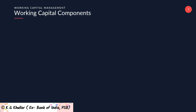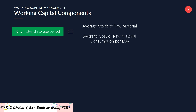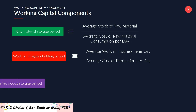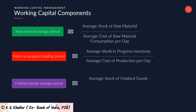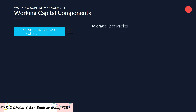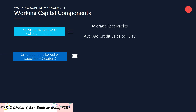Raw material storage period is calculated as: average stock of raw material divided by average cost of raw material consumption per day. Work in progress holding period is: average work in progress inventory divided by average cost of production per day. Finished goods storage period is: average stock of finished goods divided by average cost of goods sold per day. Receivables or debtors collection period is: average receivables divided by average credit sales per day. Finally, credit period allowed by suppliers is: average payables divided by average credit purchases per day.